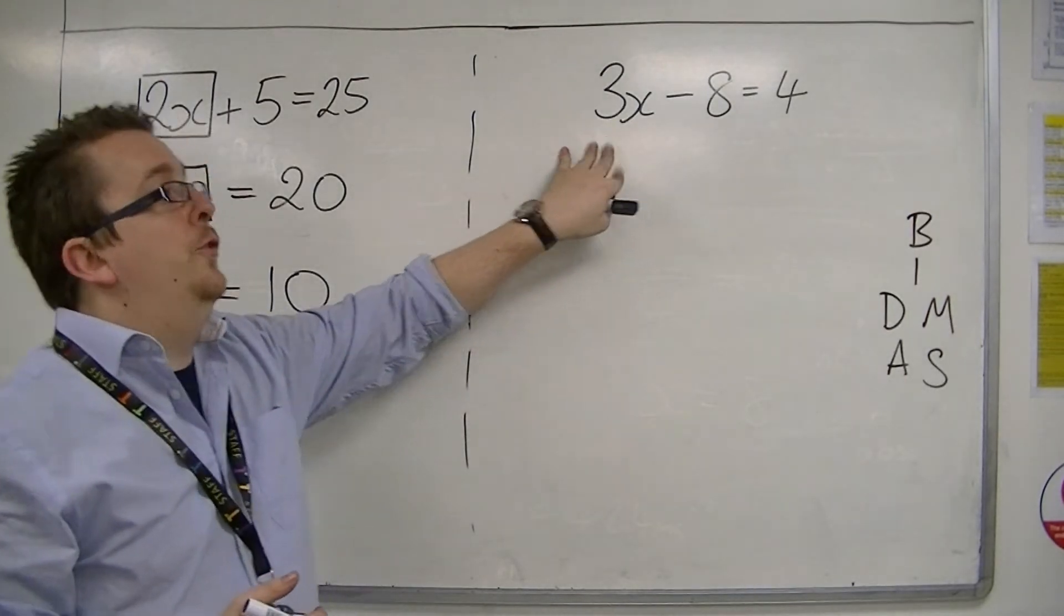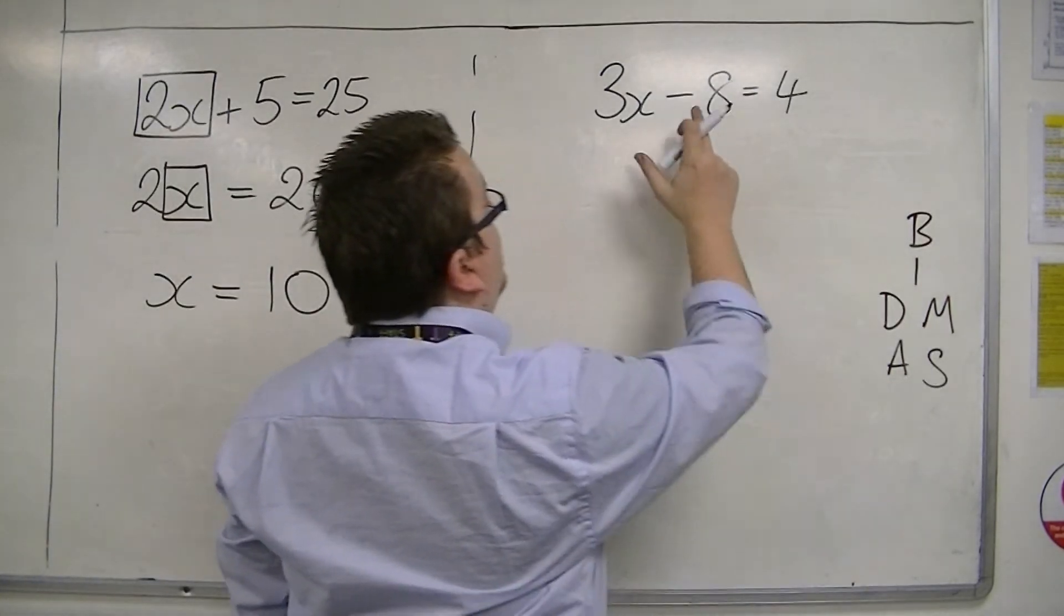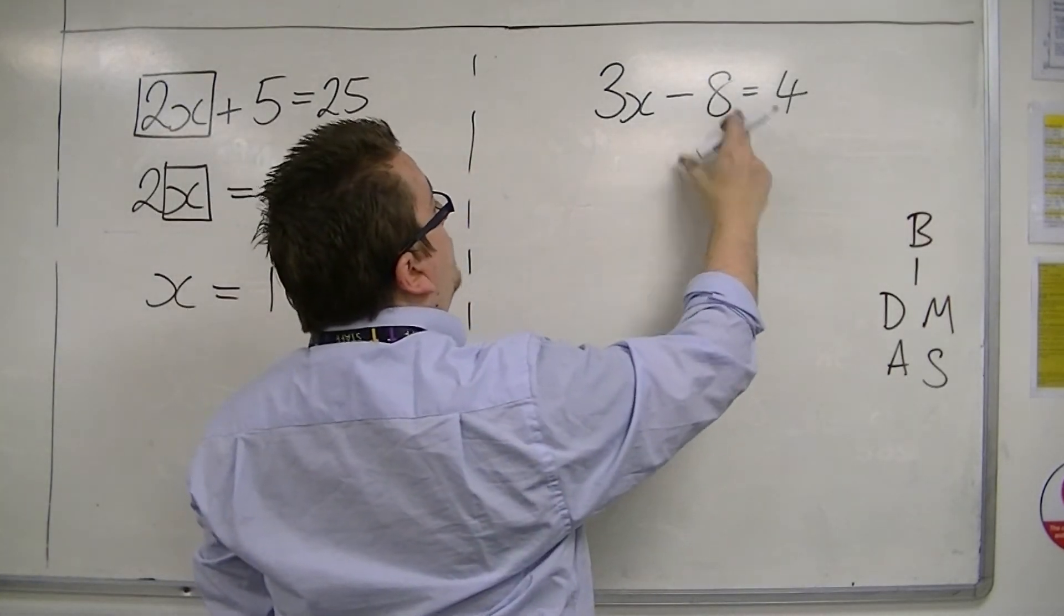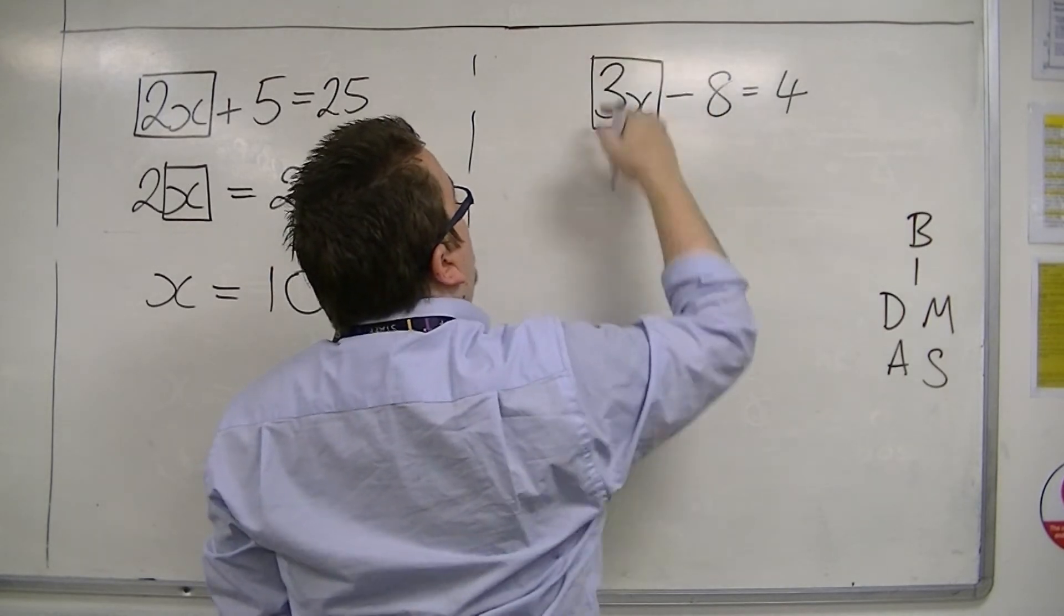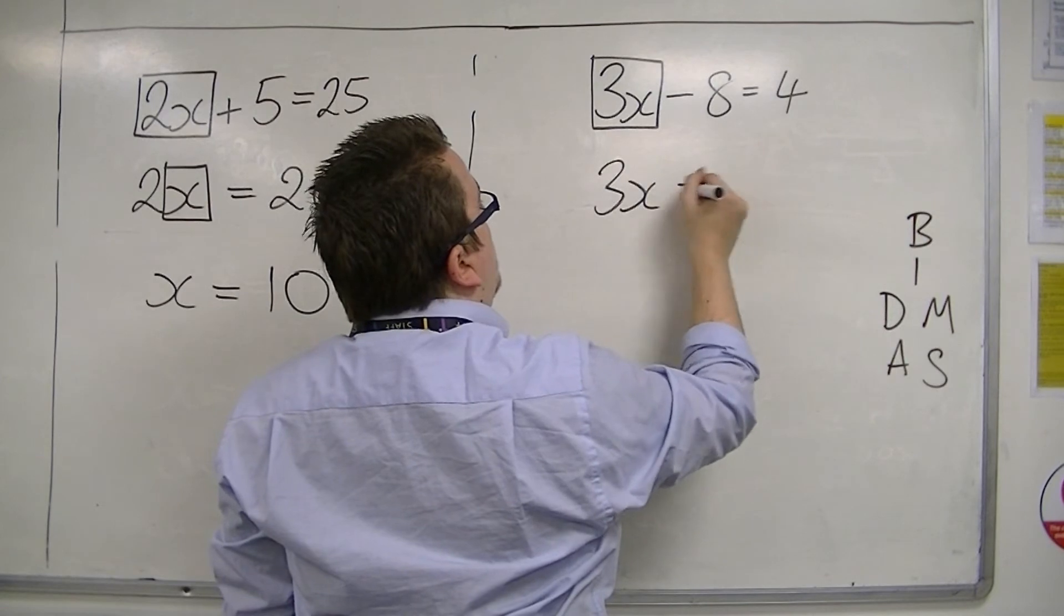3x minus 8 equals 4. And do it a similar way. We deal with the addition and subtraction first and I spot that there's a take away 8. So something take away 8 is 4, so that something must be 12.